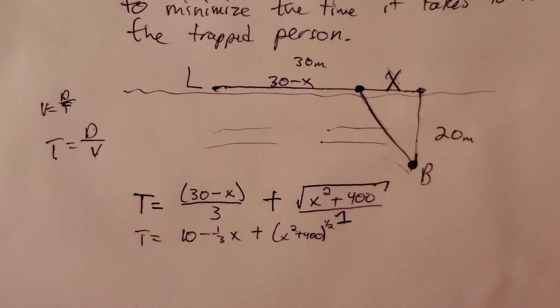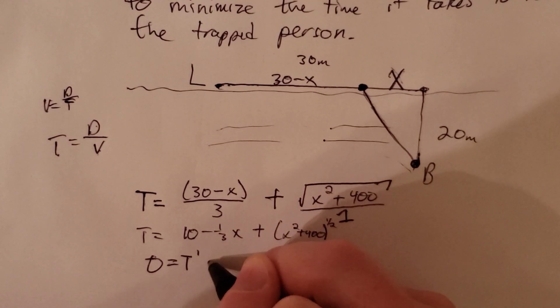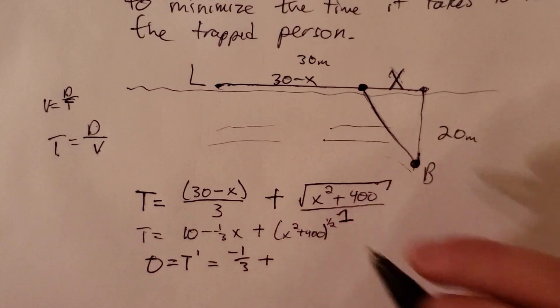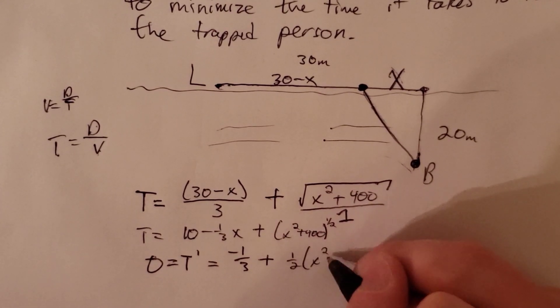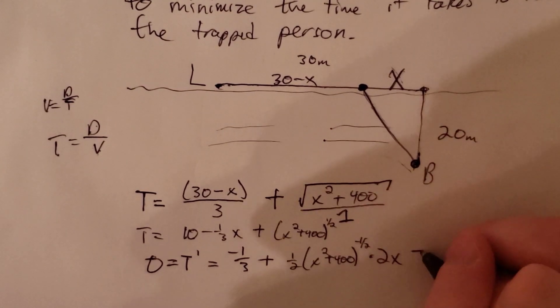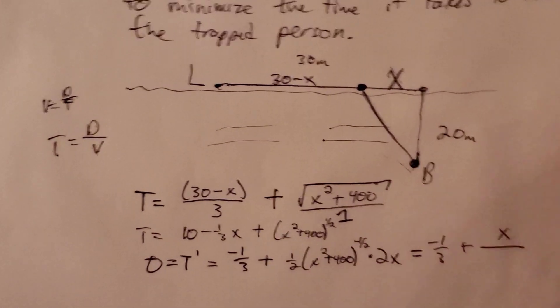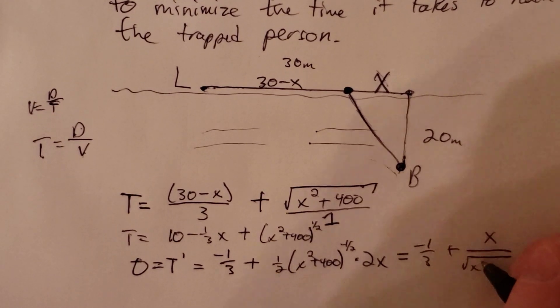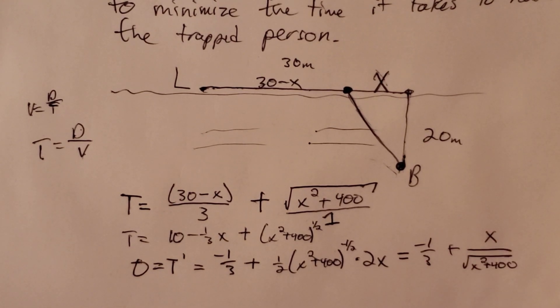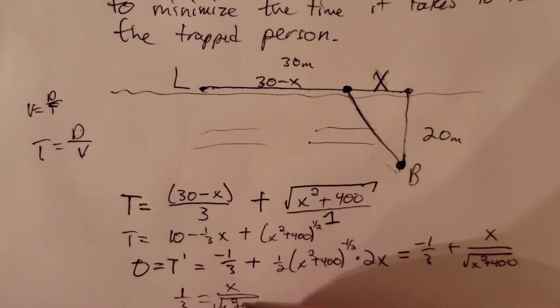To minimize this function we need to find the derivative and set it equal to zero. So this is negative one-third plus one-half x squared plus 400 to the negative one-half times 2x. If we rewrite this, this is negative one-third plus x over the square root of x squared plus 400. We want to set that equal to zero. This means we do one-third is equal to x over the square root of x squared plus 400.